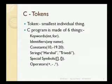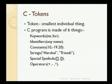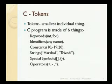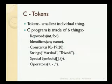There are basically six types of tokens: keywords, identifiers, constants, strings, special symbols, and operators. When we write any C program, these are the six different things on which a program revolves. If we are making any program, then these things are involved.